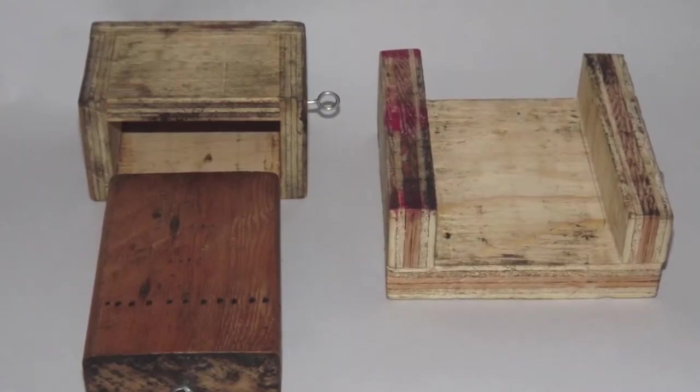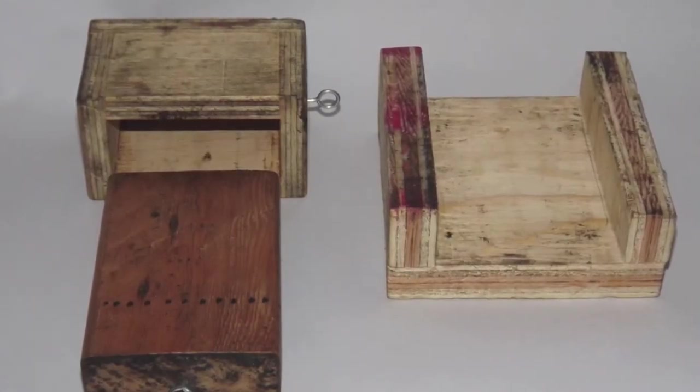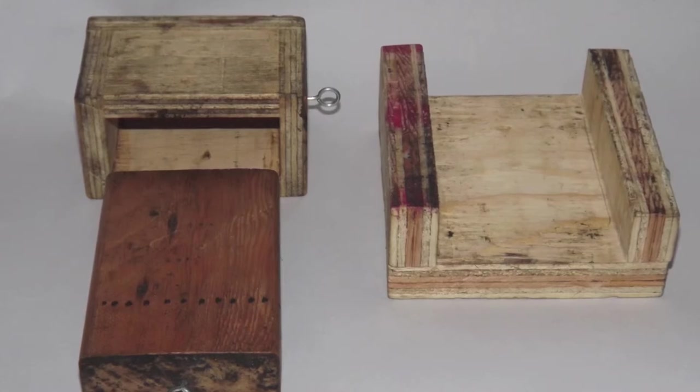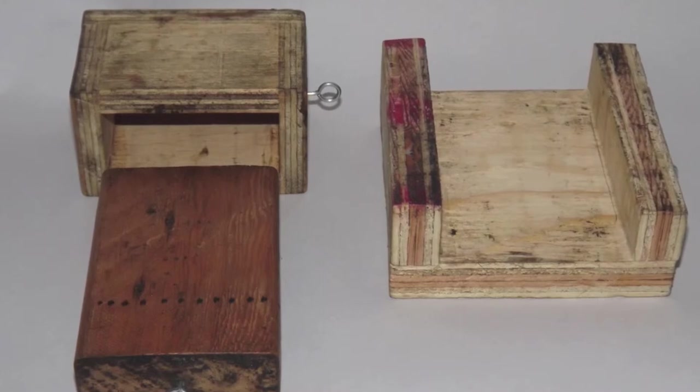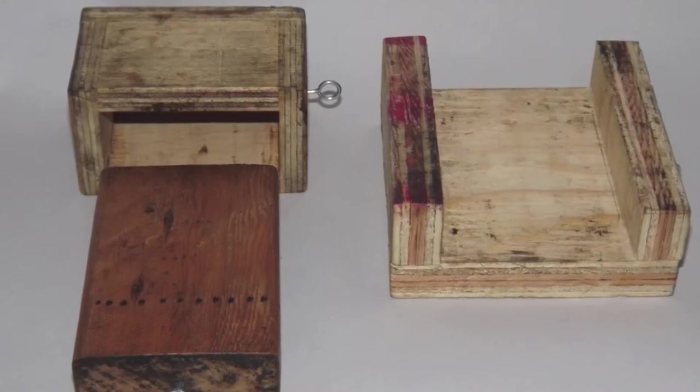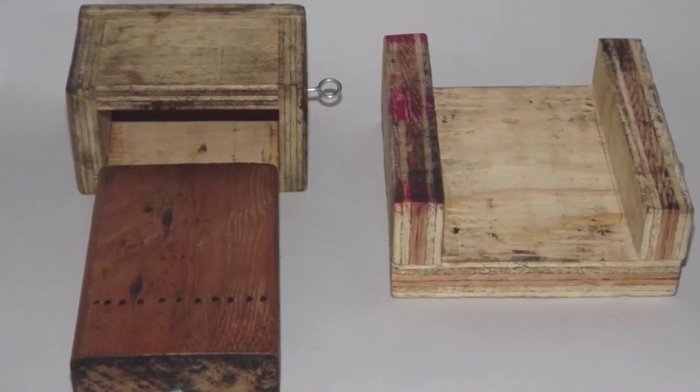The wrapper forming block measures three inches in width, an inch and a quarter in height, and somewhere between five and six inches in length. The support block is sized to loosely contain the forming block and is somewhere around two inches deep.